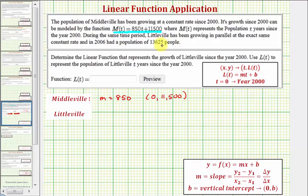Now for Littleville, we're told that it's growing in parallel at the exact same constant rate, which means the slope, or the constant rate of change, is also 850, or 850 people per year. And then we're told that in the year 2006, which is 6 years after the year 2000, the population was 13,625. So as an ordered pair, this would be the point (6, 13,625).